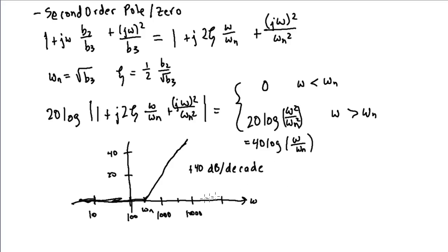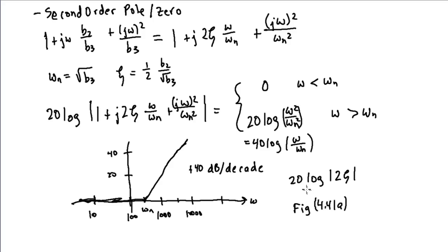The actual gain at omega equal to omega-n shown as zero in this approximation is not accurate — it depends on zeta. For the first-order term it was actually three dB. For the second-order term, the gain at omega-n is actually 20 log of two times zeta, the damping factor. In your textbook, see figure 4.41a, which shows the actual gain at omega equal to omega-n for different zeta values for a pole term. Now that we've looked at these individual terms, in the next video we'll combine them to graph the full magnitude response in decibels through a worked example.